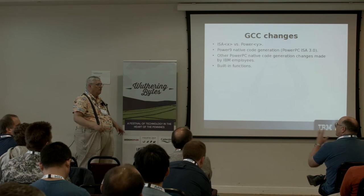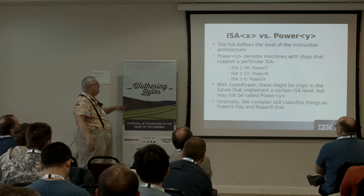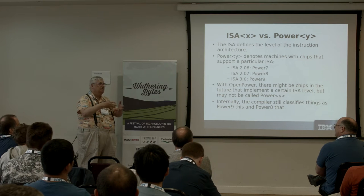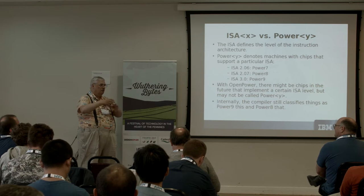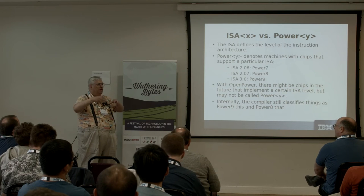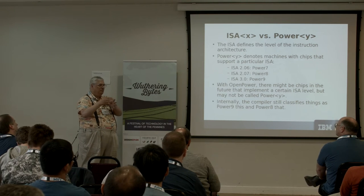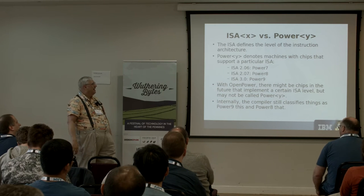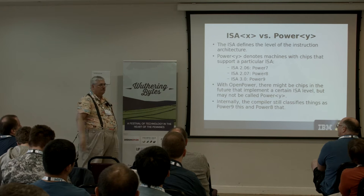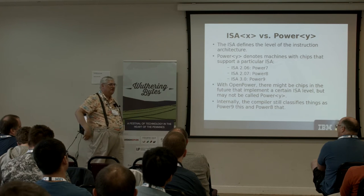OpenPower is a consortium of people. Right now IBM is the only one selling Power8 and Power9 chips, but other companies are going to want to sell their own processors. Power9 is what you get from IBM, but ISA 3.0 is the general specification. Right now it's a one-to-one correlation, but in the future there might be a Power9 plus some other functional unit. I haven't signed enough NDAs to know what will be going on.